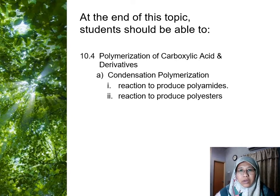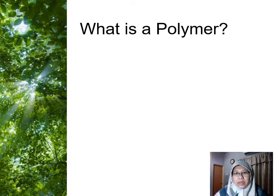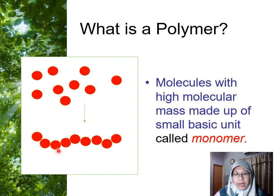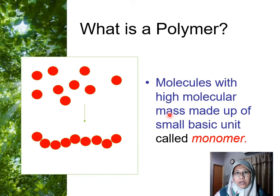There are two reactions: one to produce polyamide and one to produce polyester. A polymer is a compound that is made up from monomers. A monomer is represented by one red dot, and we are going to combine a lot of these by using a specific linkage to form a long, high molecular mass compound called a polymer.